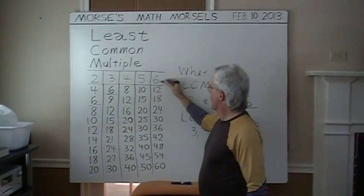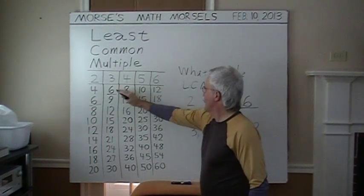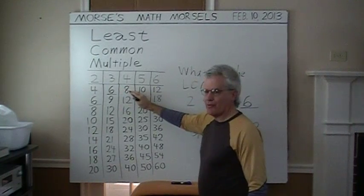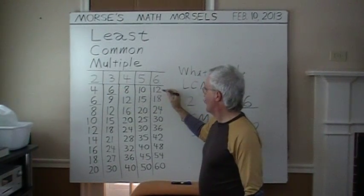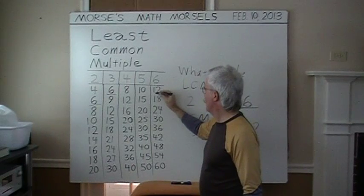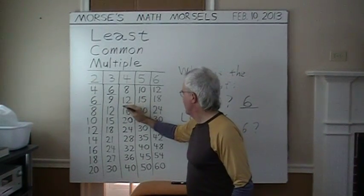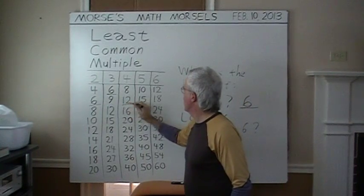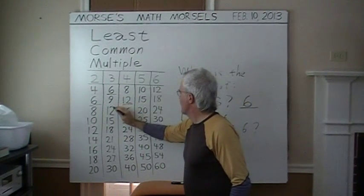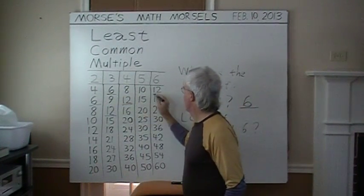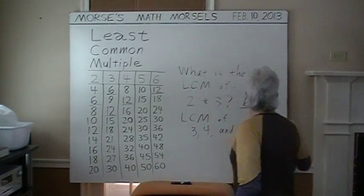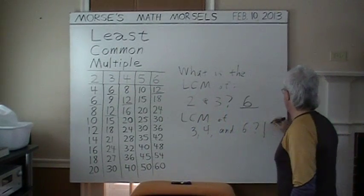We're going to look at the six times table. Six is in the three times table but not the four times table, so the LCM is not six. How about twelve? Twelve is in the six times table, and here it is in the four times table and also the three times table. So twelve is that LCM.